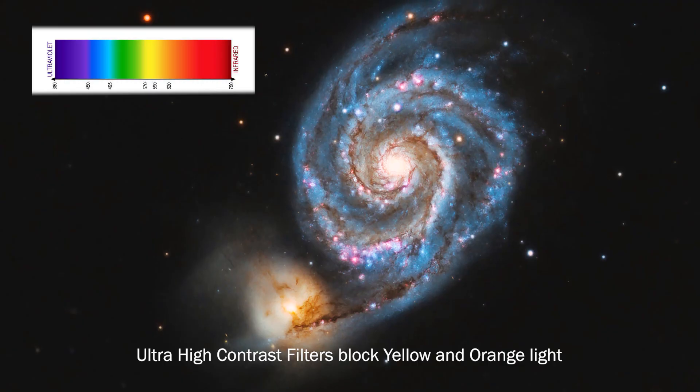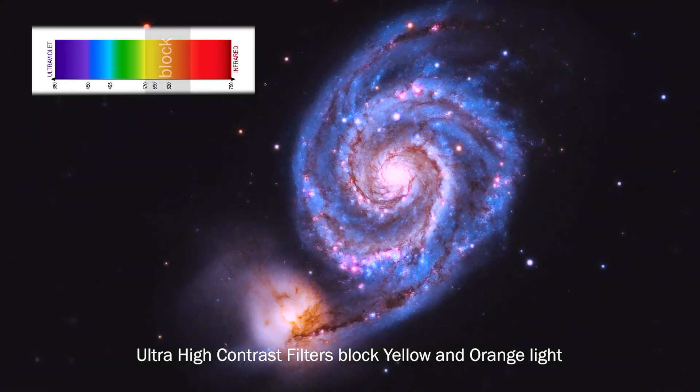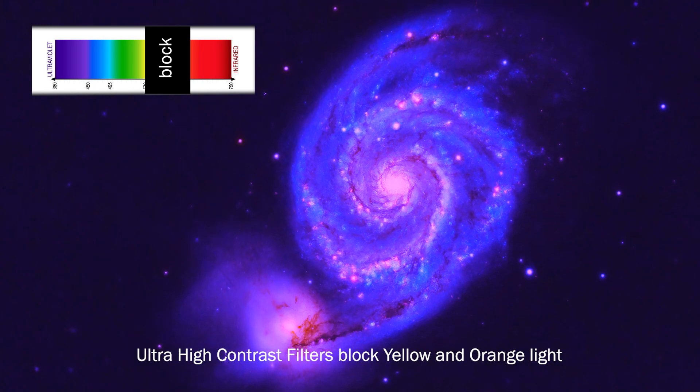Consider how much of the natural colors of a deep sky object you're willing to sacrifice. Ultra high contrast filters can help minimize or even eliminate artificial light pollution. However, keep in mind that an ultra high contrast filter can also block the natural yellow and orange light emitted by some deep sky objects like galaxies and star clusters.